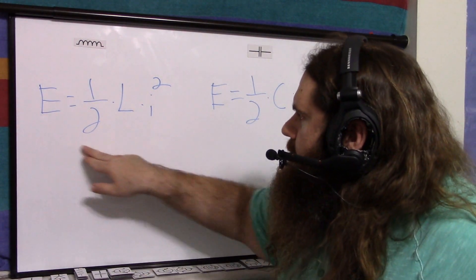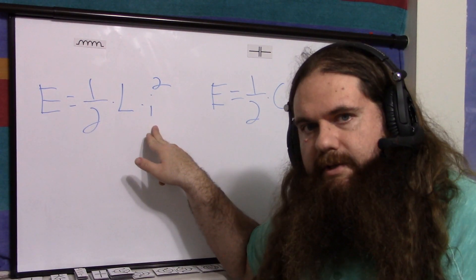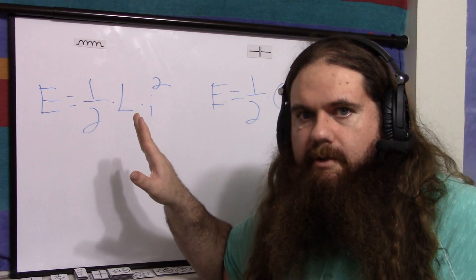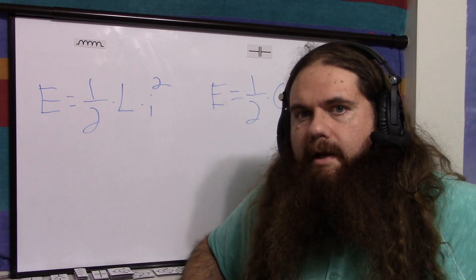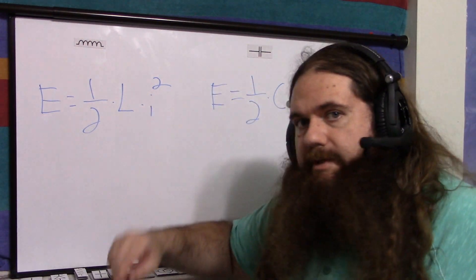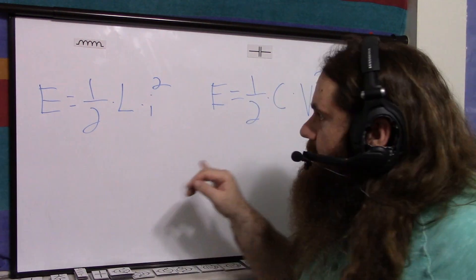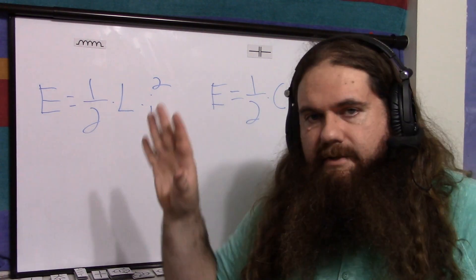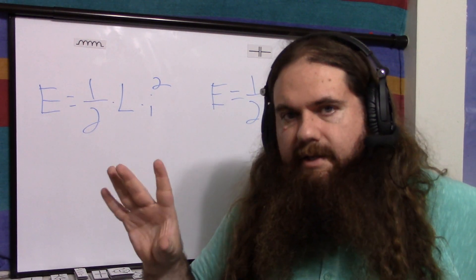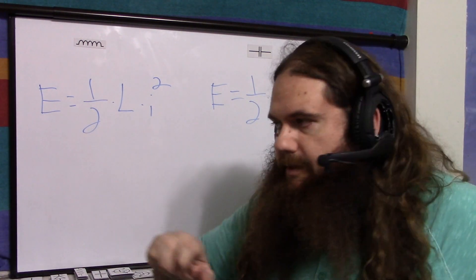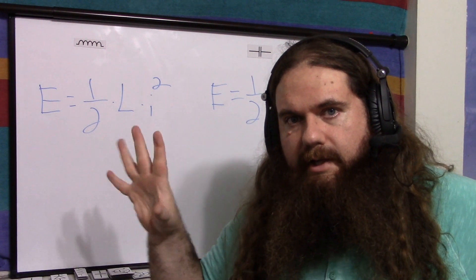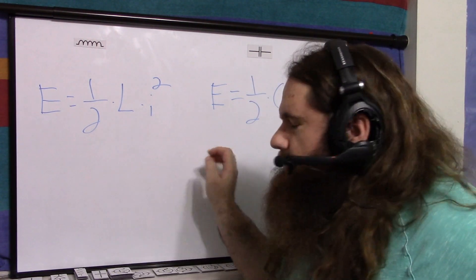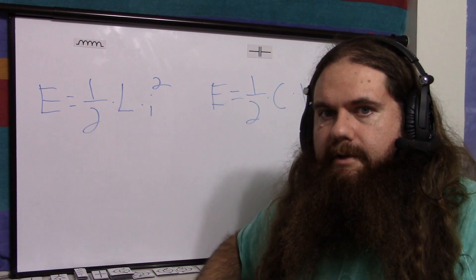If you charge up an inductor with a certain current until it's stable and not changing anymore, and then you rip that current away, it's going to put out that same current. If you charge up a capacitor to a certain voltage until it's sitting there charged, and then you let it go, it's going to release that voltage. That's what I mean by storing current and voltage.